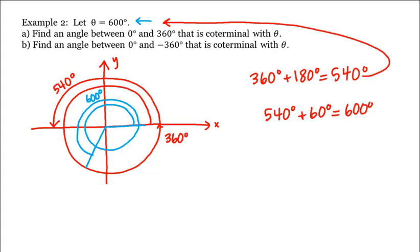Alright, so we're first looking for an angle between 0 and 360 degrees that is coterminal with this angle. Wouldn't that just be this angle here, which would be 180 degrees plus 60 degrees, or 240 degrees? Both of these angles have the same initial and terminal sides, and moreover, 240 degrees is between 0 and 360 degrees. So 240 degrees would be our answer to part A.